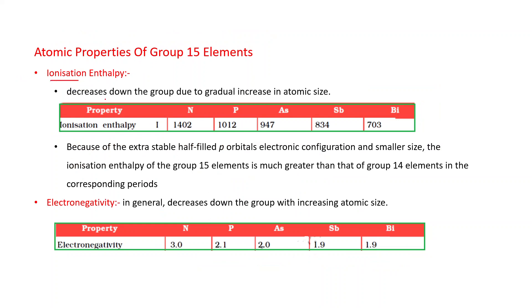Ionization enthalpy decreases down the group due to gradual increase in atomic size. You can see from this table it continuously decreases. If we compare the ionization enthalpy with Group 14 elements, the general trend is ionization enthalpy increases from left to right. But Group 15 elements have high ionization enthalpy compared to Group 14 because of extra stable half-filled p orbital electronic configuration. That's why their ionization enthalpy is much greater than that of Group 14 elements in the corresponding periods.